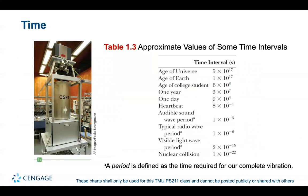Now let's talk about time. The cesium fountain atomic clock neither gains nor loses a second in 20 million years. Historically, the second was defined by the solar day. In 1967, the second was redefined using the characteristic frequency of light emitted from a cesium-133 atom. It is now defined as a specific number of oscillations of radiation from the cesium atom.